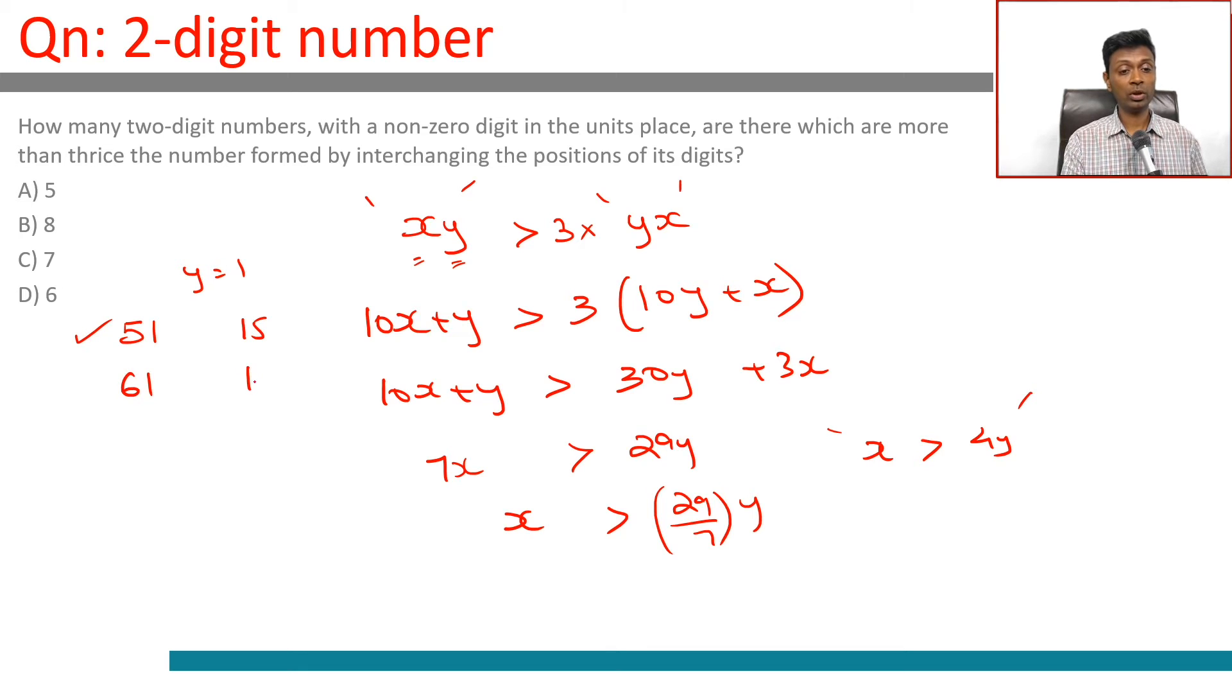61, 3 times 16, this will work. 71, 81, 91, all of these will work. Let's check 41 as well. 41 and 14 - 14 into 3 is 42, it doesn't work. These five numbers work.